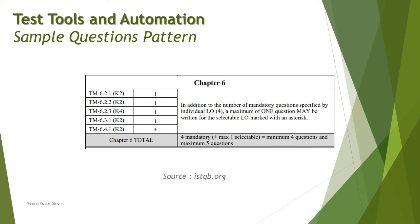The very first thing is the type and number of questions you can expect from this chapter. You can expect four mandatory questions from the basic topics: 6.2.1, 6.2.2, 6.2.3, and 6.3.1, which also has an additional selectable question, possibly from 6.4.1. Altogether you will have five questions from this chapter. Expect one K4 question from 6.2.3 and the rest are K2. Make sure you put complete effort into understanding 6.2.3.